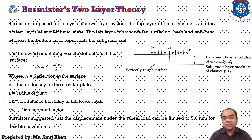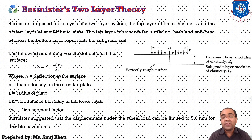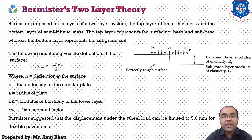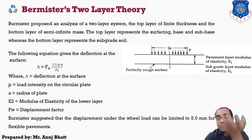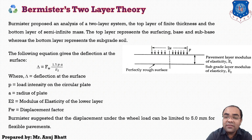For this theory, the equation for deflection at the surface is: delta equals F_w multiplied by 1.5 times p times a upon E2, where delta is the deflection, p is the load intensity on the circular plate, a is the radius of the plate, E2 is the modulus of elasticity of the lower layer, and F_w is the displacement factor. E2 is used because the load ultimately transfers to the bottom layer.